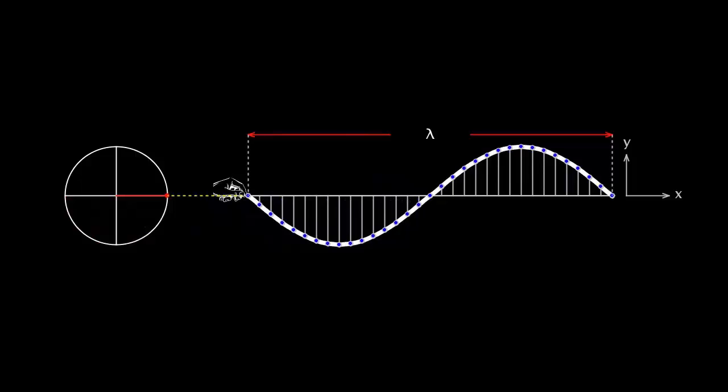When the element at the left end completes one oscillation, the particle at the right end is just about to begin oscillating. The vibration produced at the left end has moved one wavelength in one time period along the rope. The elements at the left and right differ in phase by two pi. Phase decreases linearly with distance, decreasing by two pi for every distance lambda from the source.